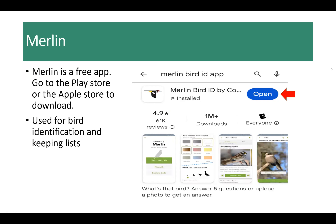Merlin is a fairly well-known, free app. To download it, you just need to go to the Play Store for Android phones or the Apple Store for iPhones. Primarily, this app is used for bird identification and for keeping lists. We're featuring it because it is a very popular app — many people are familiar with it already or are curious about it, and it's also a very good app. There are other apps out there as well; some are free and some have a cost associated.